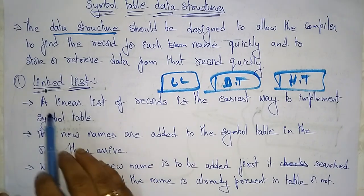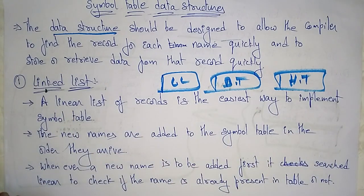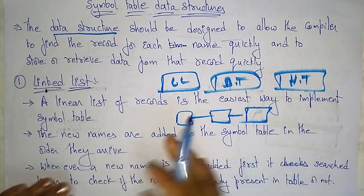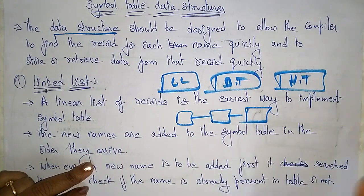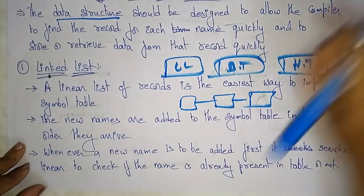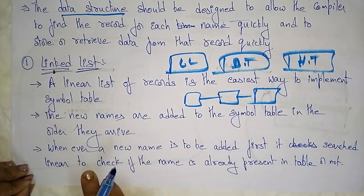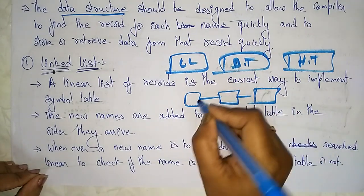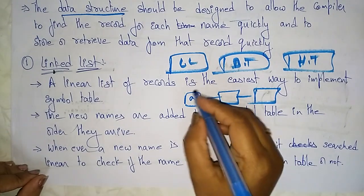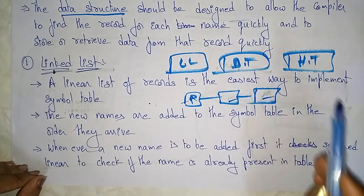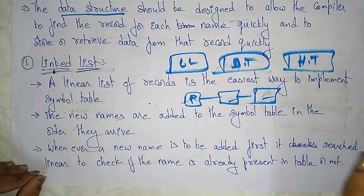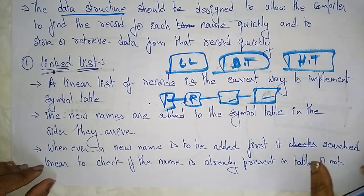A linear list of records is the easiest way to implement the symbol table. New names are added to the symbol table in the order they arrive. Whenever a new name is to be added, it first searches linearly to check if the name is already present in the table or not. For example, if variable 'a' or procedure 'p' information is already present, the compiler checks whether 'p' is present. If it is present, it continues with the program; if not, it adds another record in the list.